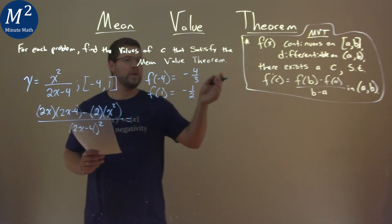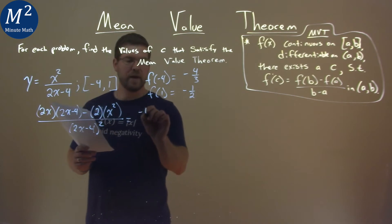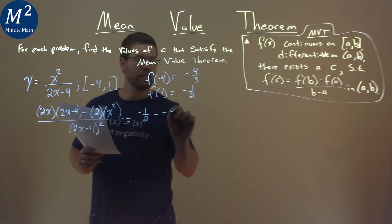We set that equal to f of b minus f of a, so negative one half minus negative four thirds, all over b minus a, 1 minus negative 4.